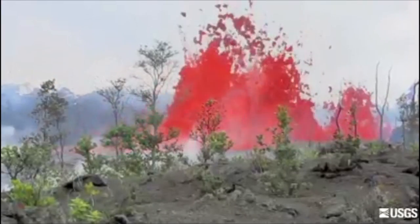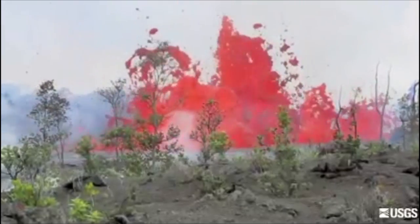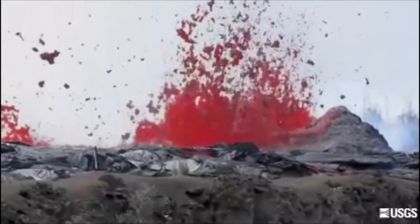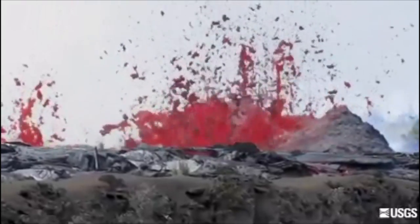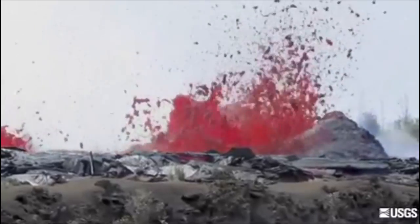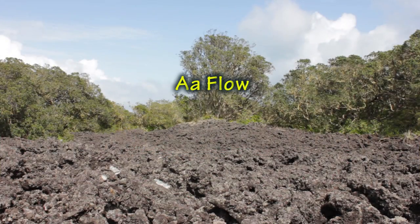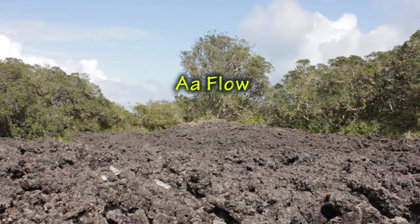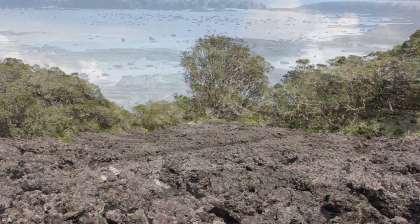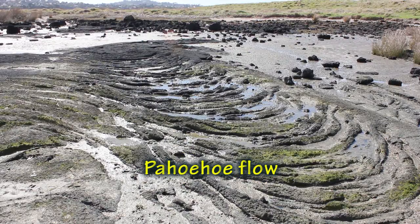When the eruption occurs, material can move in many ways. There can be lava flows. Lava is the hot molten rock or magma that flows down the sides of volcanoes. Lava flows range from being extremely thick and viscous, which we call an aa flow, to highly fluid, which we call a pahoehoe flow.